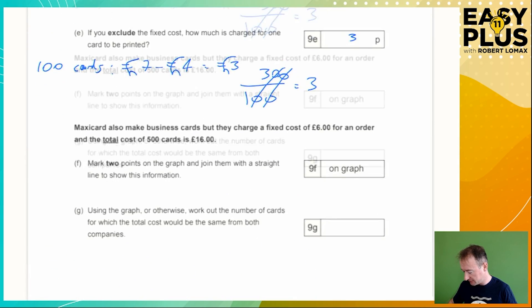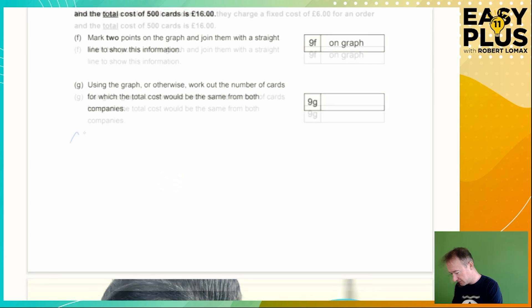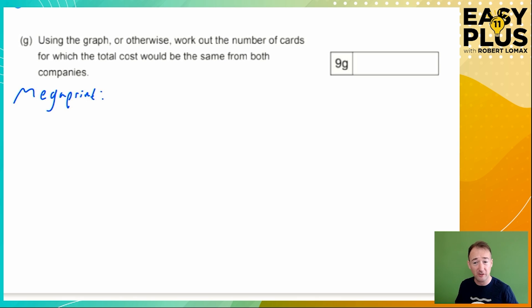So Megaprint was the first company that we were looking at. Megaprint had a pricing structure that worked like this: the price was equal to £4 fixed cost that you were charged however many cards you ordered, and then you were also charged three pence for every single card. So you were charged three pence, otherwise known as 0.03 pounds. Remember we've got four pounds here so we need to keep everything in pounds. 0.03 pounds is three pence, three hundredths of a pound. So three pence times the number of cards, 0.03c. You don't need to write times in algebra, it's just 0.03c.